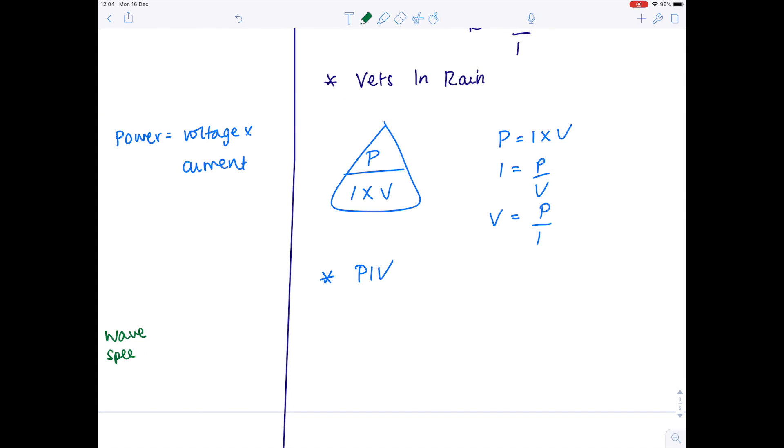Now the wave equation. So wave speed equals frequency times wavelength. So speed is given by V. Frequency is given by F. And wavelength is given by that Greek symbol lambda. So here's the triangle. It's a weird triangle. There's not a particular way in which I learnt it, but because it looks weird, I'd remember it. So wave speed equals frequency times wavelength. Wavelength equals wave speed divided by frequency. And frequency equals wave speed divided by wavelength.